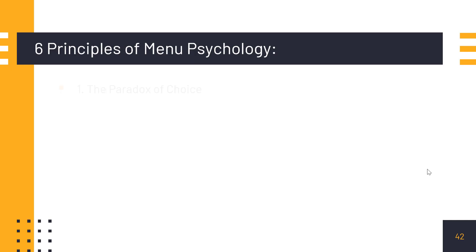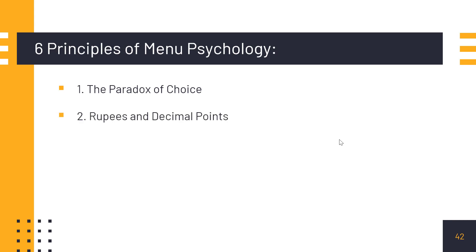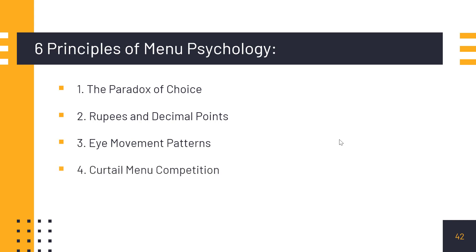Let's talk about the six principles of menu psychology. First is the paradox of choice. We are going to discuss everything. First is the paradox of choice, second is rupees and decimal points, third is eye movement patterns, fourth is curtail menu competition, fifth is to use the full power of words, and sixth is social proof. So every principle, we are going to talk about it in depth.